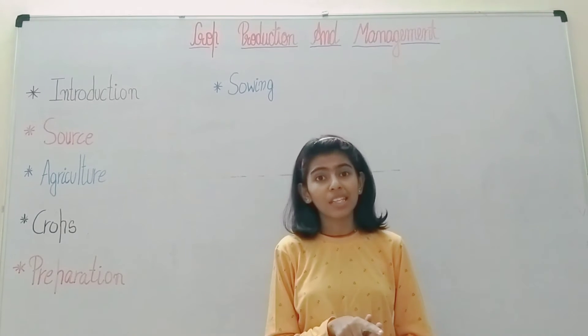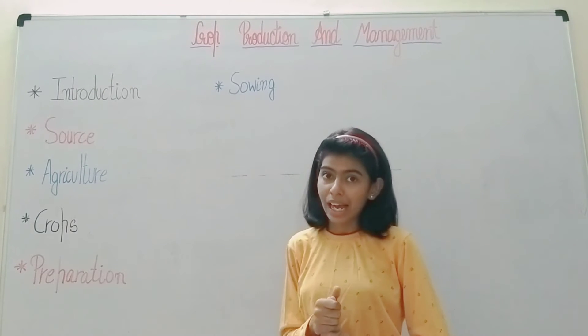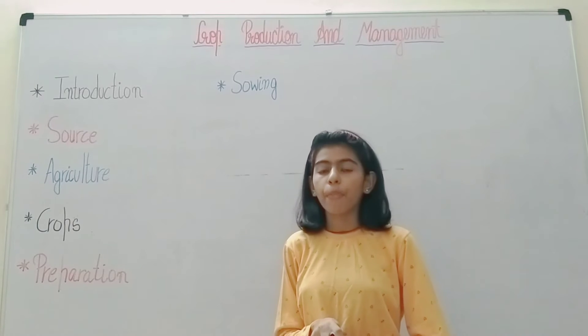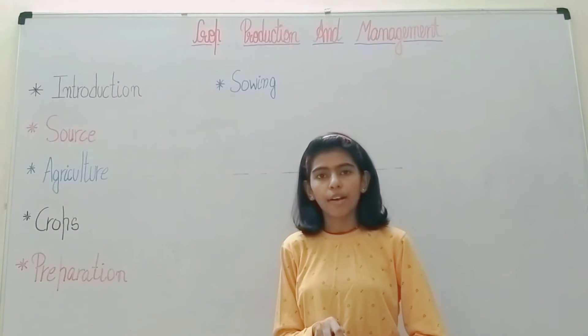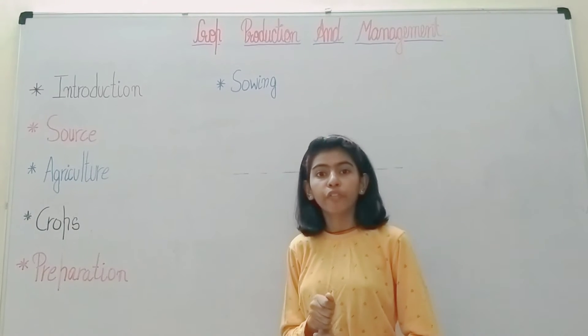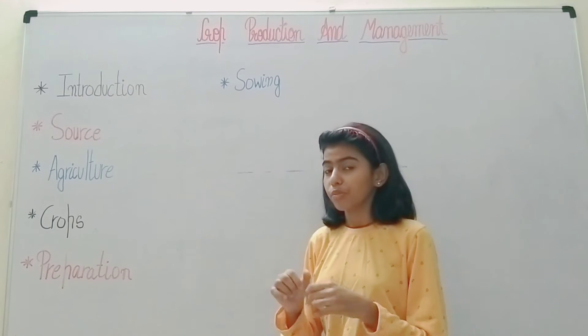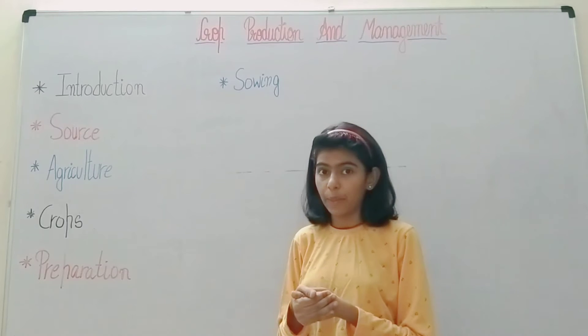The second type is rabi crop, known as winter crop. It is grown in September or October and harvested in March or April. It requires dry and cold climate.